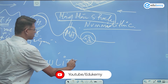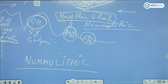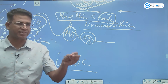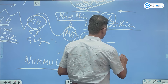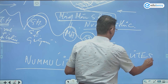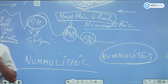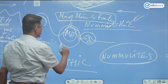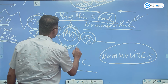Why are they called nummulithic rocks? Because they are sourced from a type of marine organism called nummulites. Nummulites are one type of marine organism, and their depositions are called nummulithic sediments. These sediments are the dominant ones in the Middle Himalayas, formed during Miocene times.